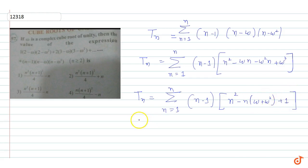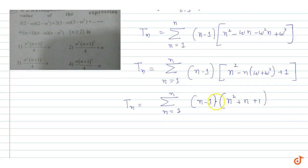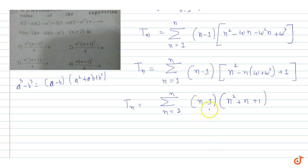So Tₙ = (n-1)(n² + n + 1). This is exactly the algebraic identity a³ - b³ = (a-b)(a² + ab + b²), treating a = n and b = 1. So (n-1)(n² + n + 1) = n³ - 1.